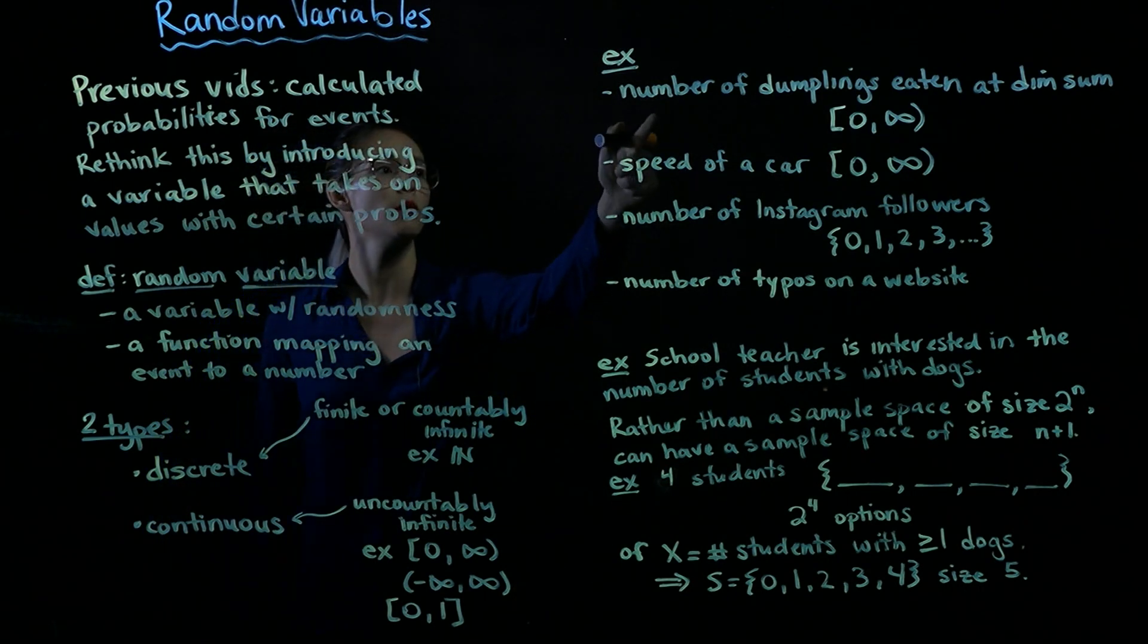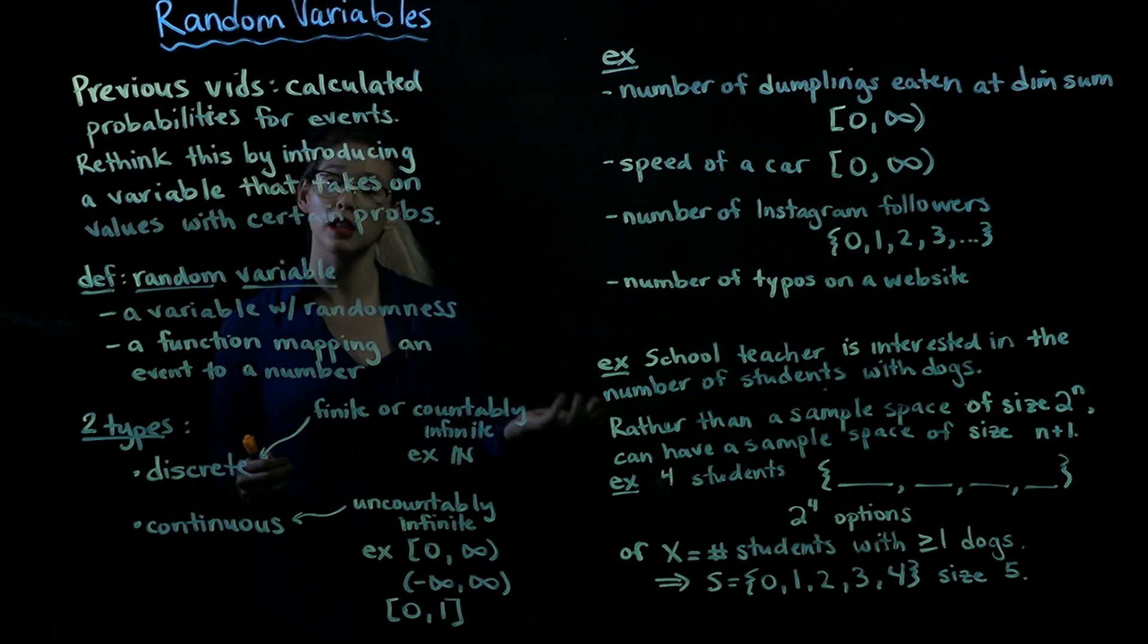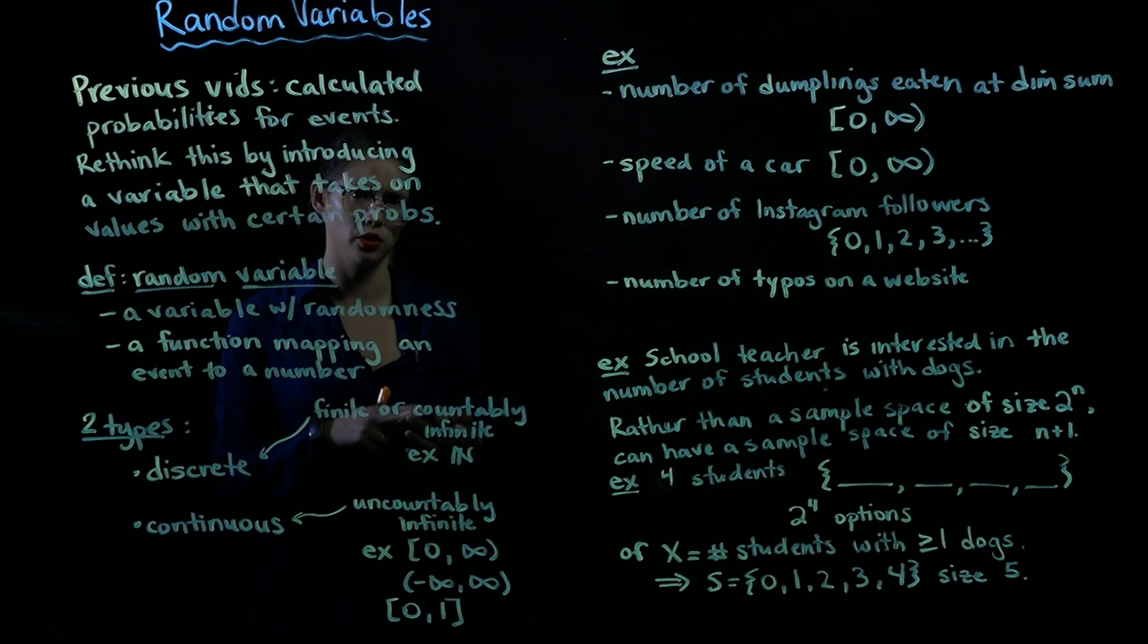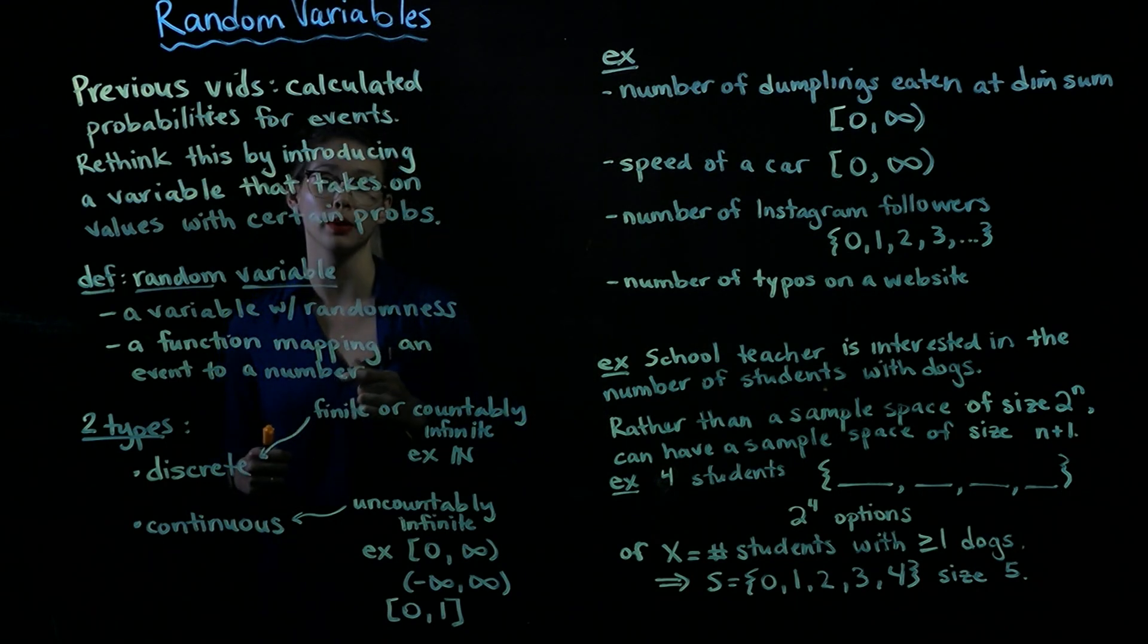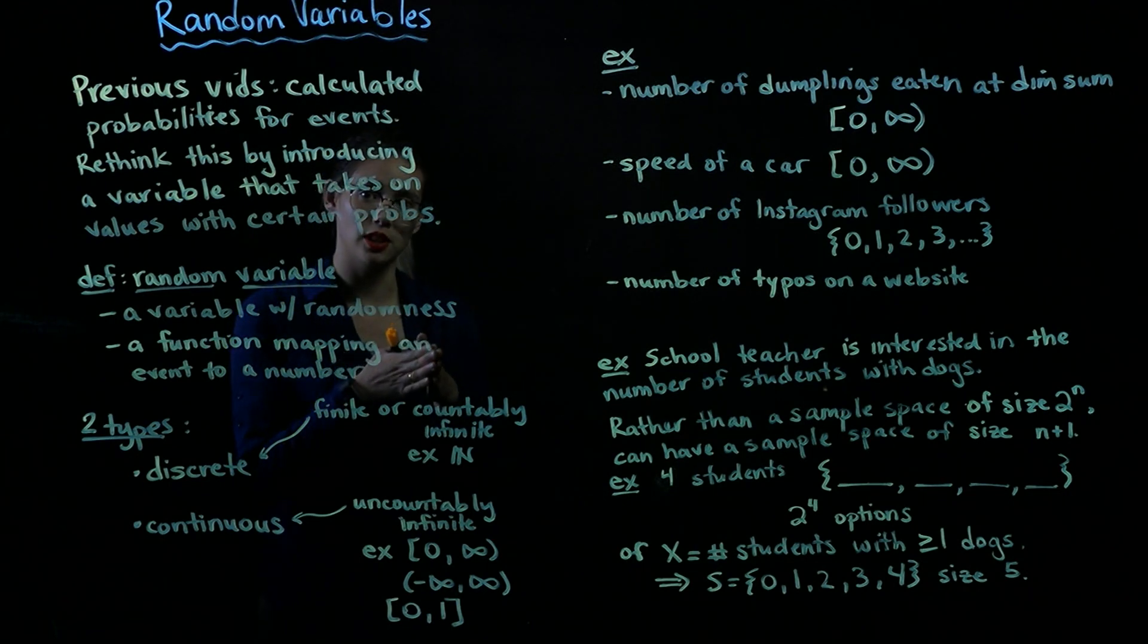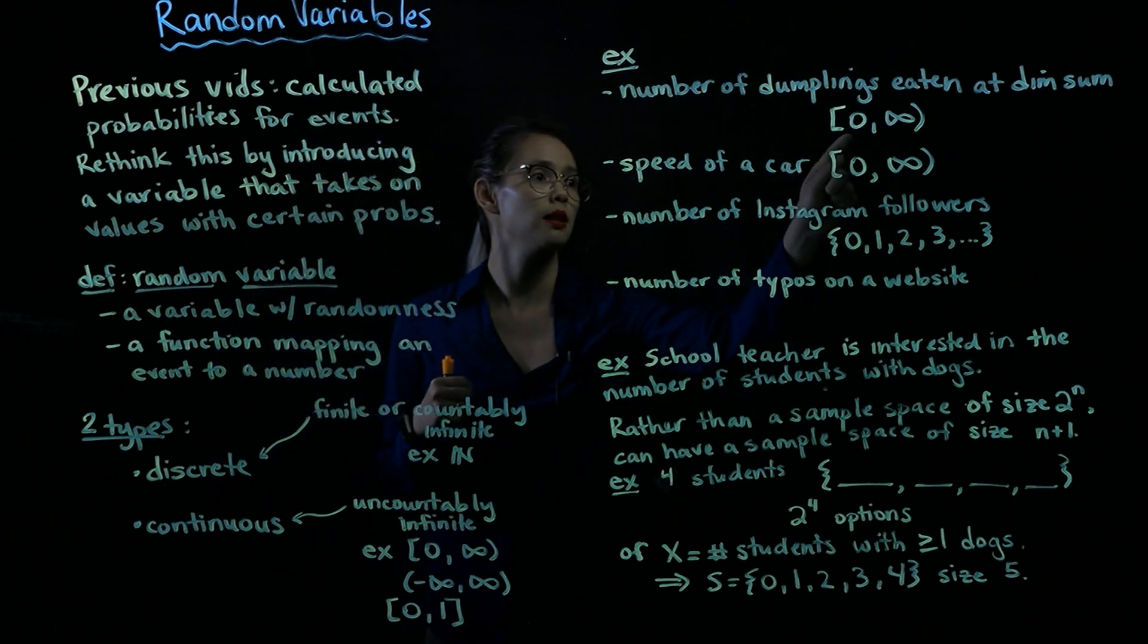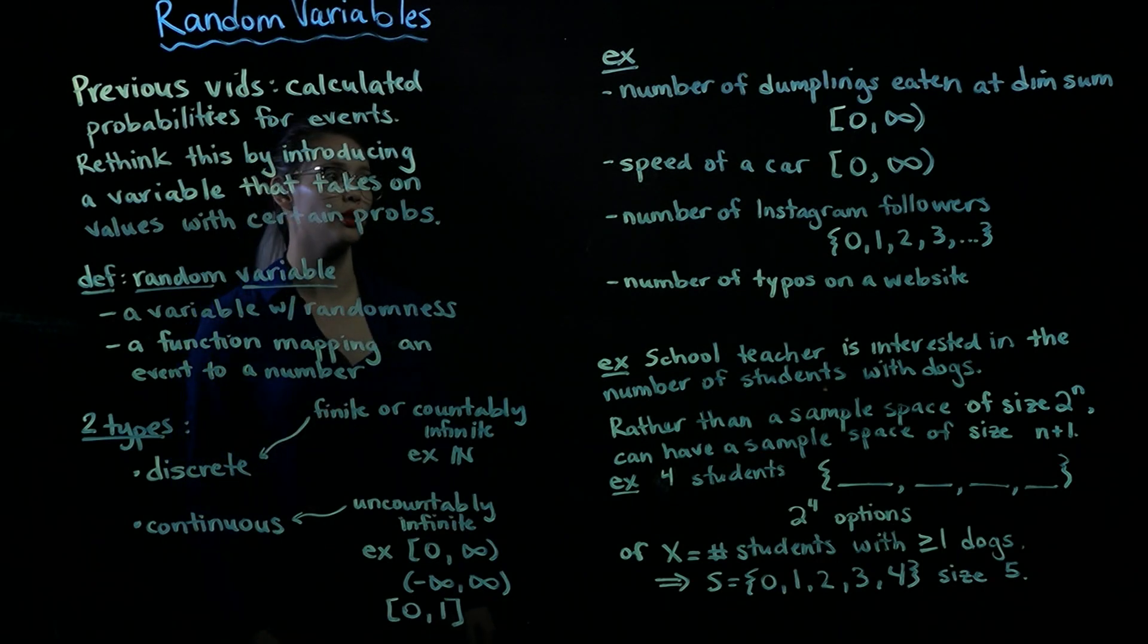So continuous random variables, a couple examples. The number of dumplings that you eat at dim sum. So maybe initially you would think, well, I could only eat like 0, 1, 2, 3, that many dumplings. But you could eat half a dumpling, or you could eat 3 quarters of a dumpling, or you could eat 4 fifths of a dumpling, or you could eat 99 out of 100 of the dumpling. There's no like amount of precision that you'd have to stop at. So you could eat anywhere between 0, including 0, number of dumplings, up to and not including infinity.